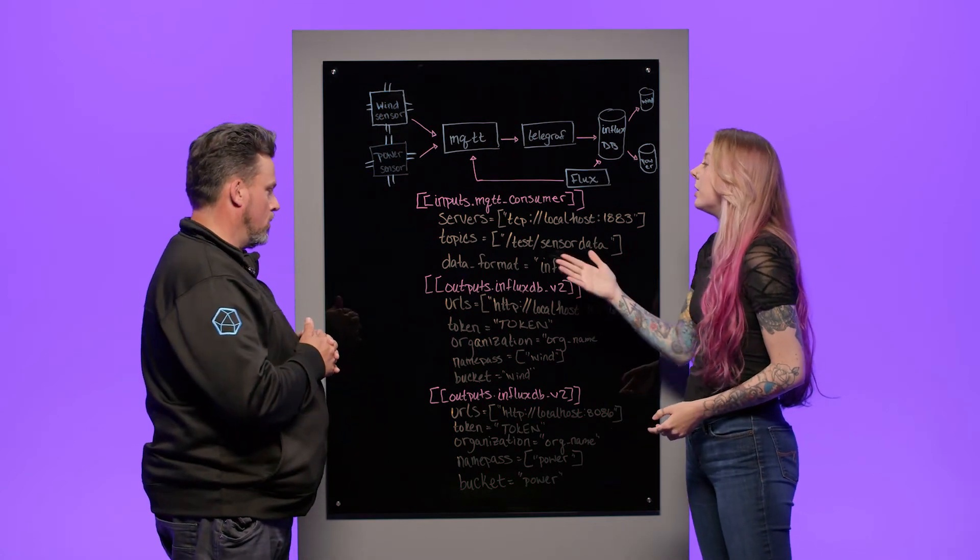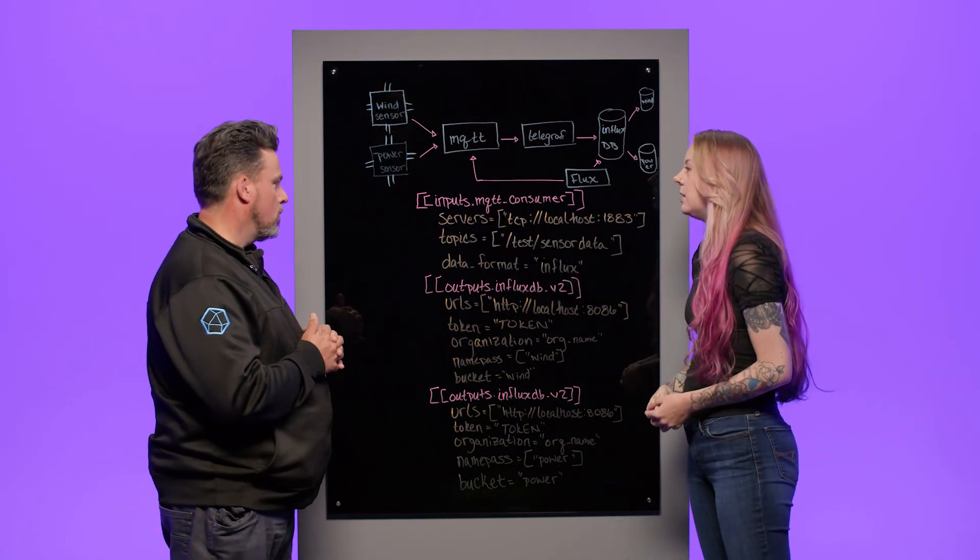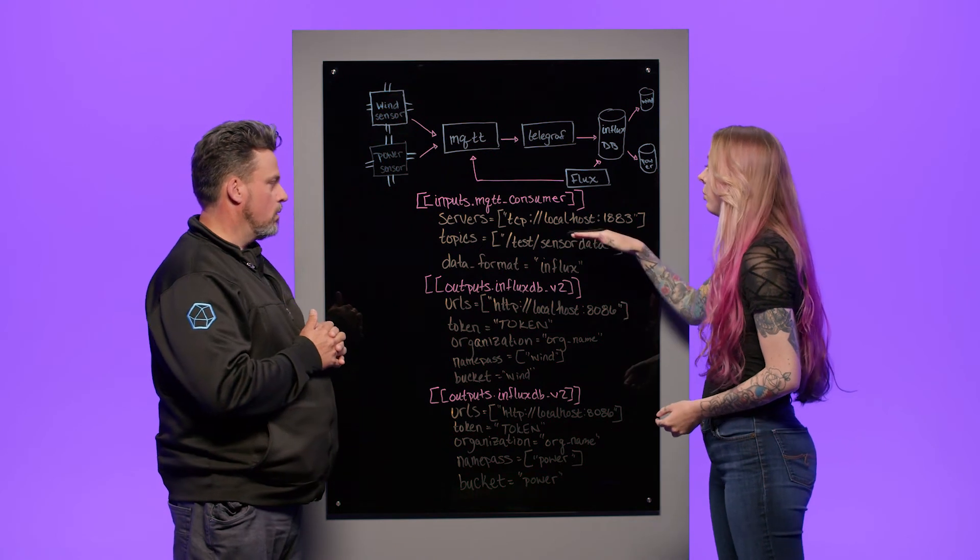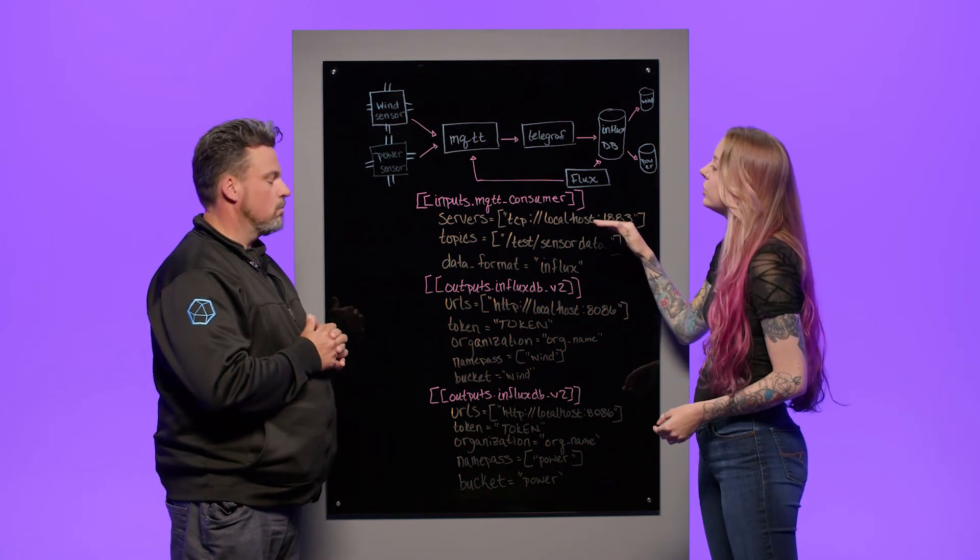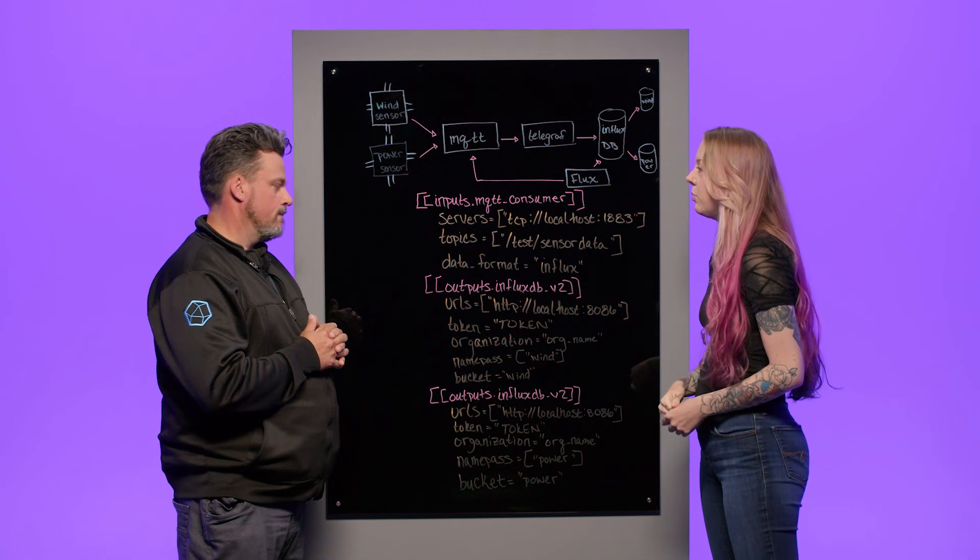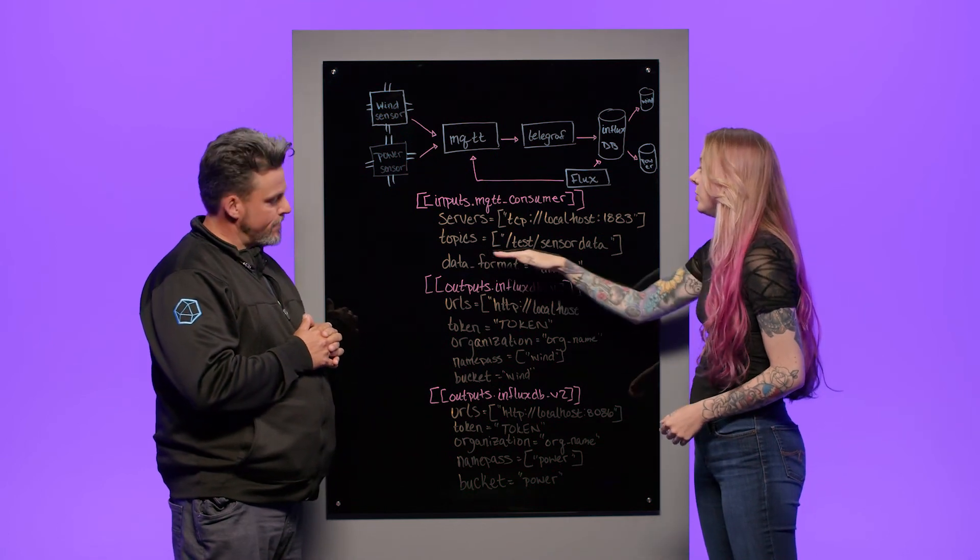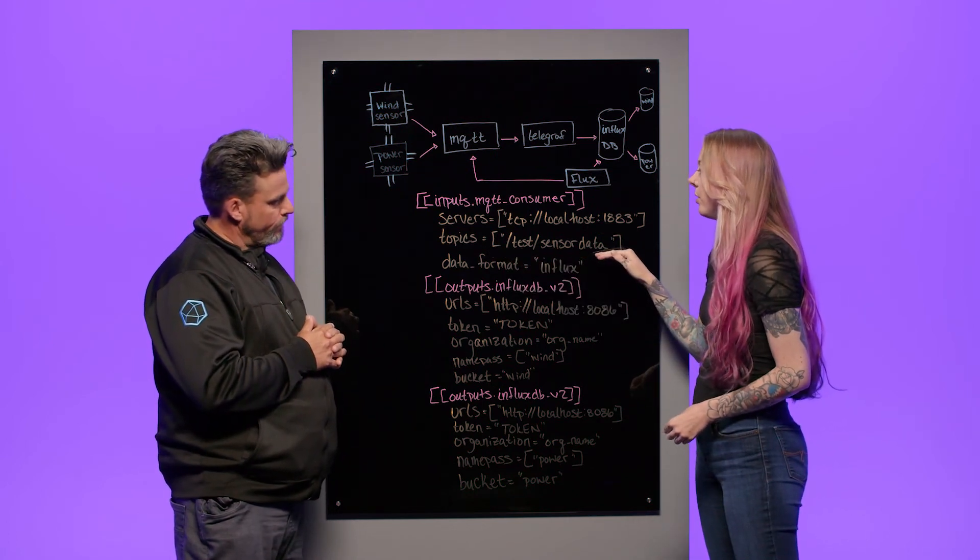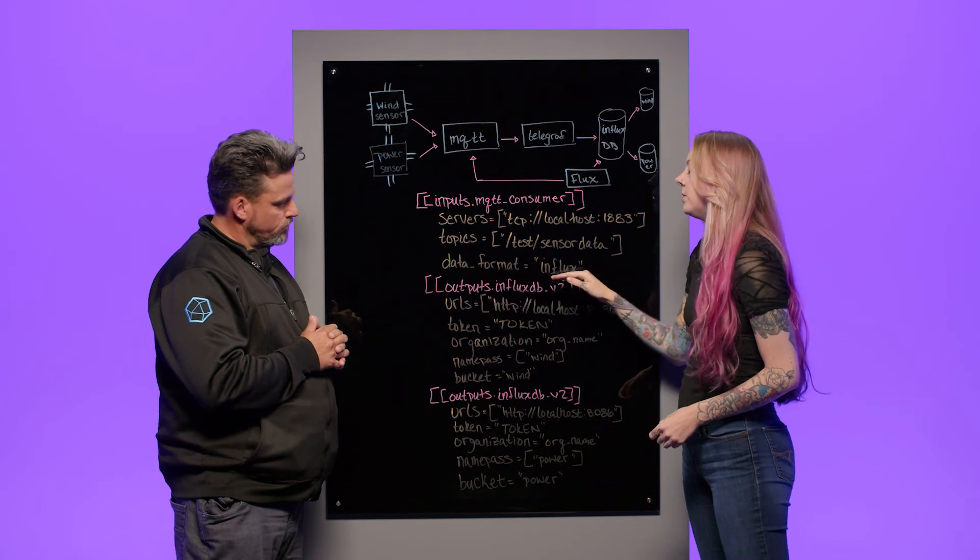How does that work? You're going to start with the inputs.mqttconsumer plugin. Okay. Point it at your server, in our case, localhost, which is also where our MQTT broker lives.